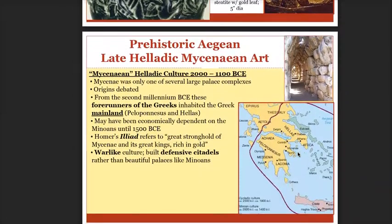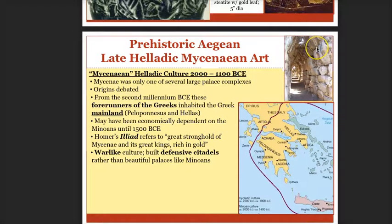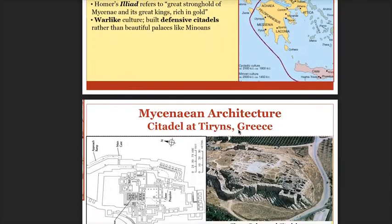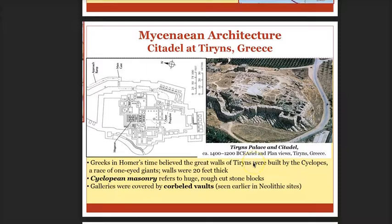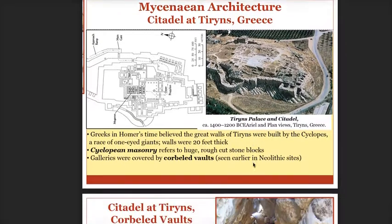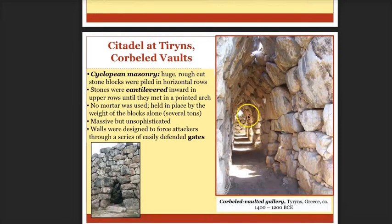Moving on to Mycenaean art, which was on the mainland — the peninsula that connects with mainland Greece. Homer's Iliad refers to the great Mycenaean kings, supposedly rich in gold. I want to point out the architecture. In the Mycenaean culture we start to see a different type of architecture. They're figuring out how to stack stones to come up with a pointed, vaulted space. They developed citadels and fortresses, so we know they were a somewhat more warring group.